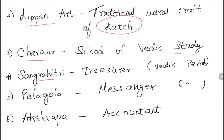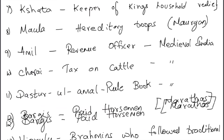Charana was a school of Vedic study. Sangrahitri were treasurers in the Vedic period. Palagala were messengers in the Vedic period. Akshvapa were accountants in the Vedic period. We will shuffle things across periods so it is easier to fix and remember them. Shata were keepers of the king's household during the Vedic period.